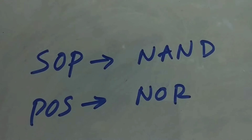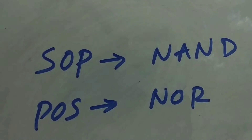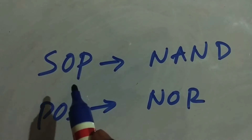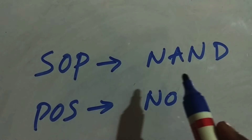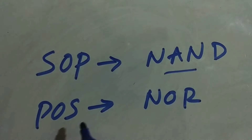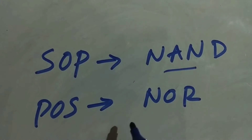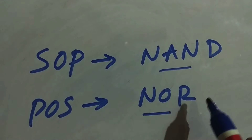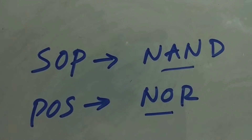Before going to the examples, I want you to remember that SOP can be easily implemented using NAND gates, and POS can also be easily implemented using NAND gates. Don't forget this.